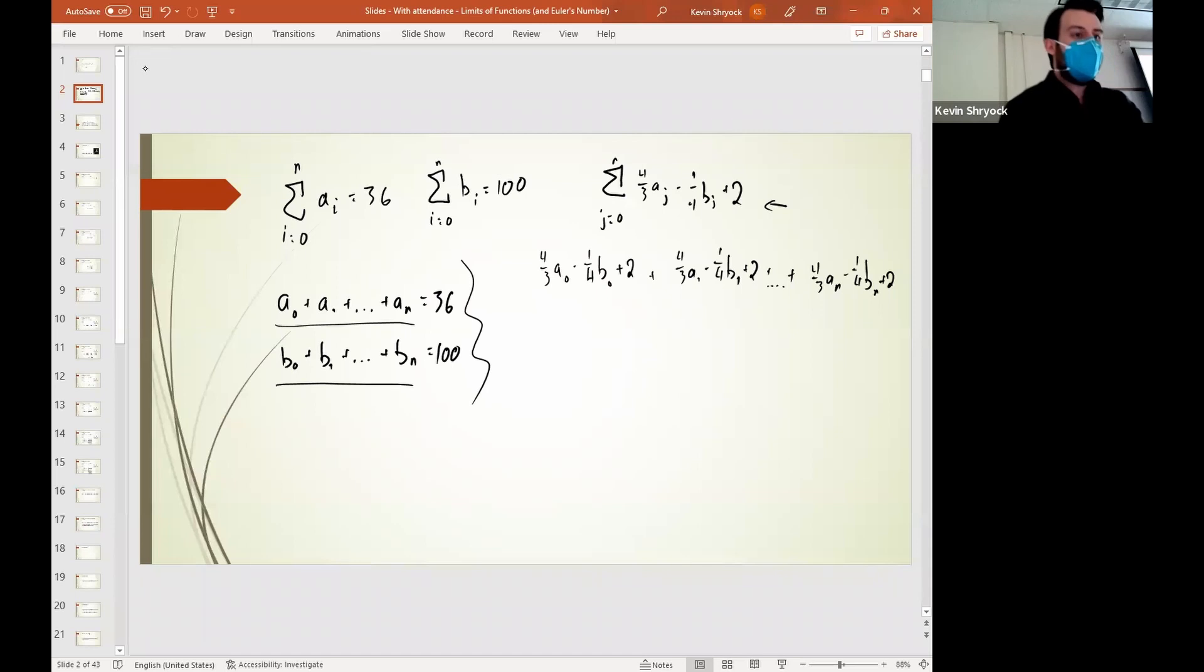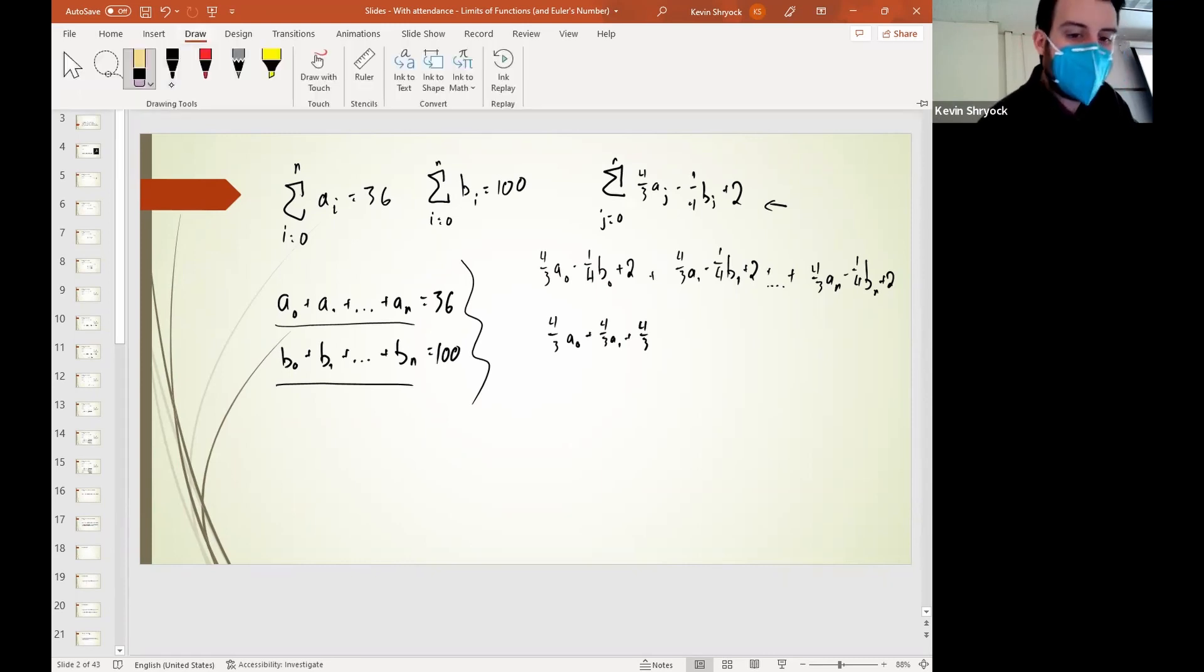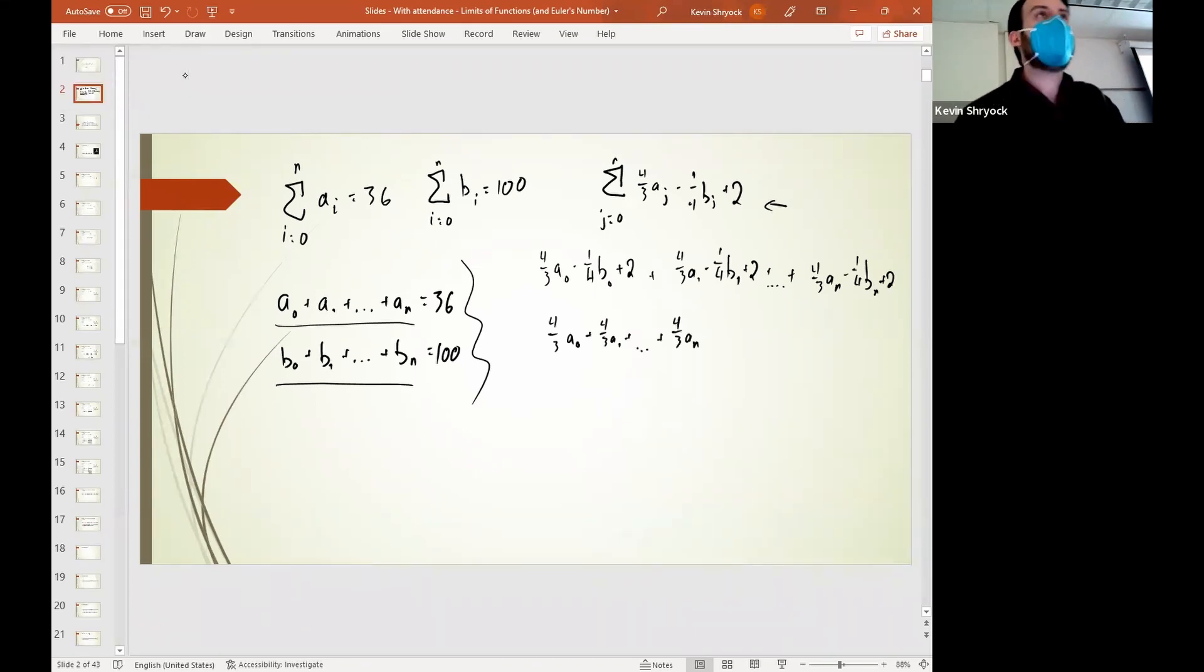If I want to bring all the A's together, that'd be 4 thirds A0. And then I need to grab the next A, which would be 4 thirds A1. And then the next one, 4 thirds A2, et cetera, all the way down. So I'd have 4 thirds A1, all the way on down. Alright. Got that. Should we do that with the B's? Let's try it with the B's. I'm going to grab all the different B's. I've got one right here. I'll put it in. I've got negative 1 fourth B0. I've got a negative 1 fourth B1. And I'm going to continue that going on and on and on until I get to negative 1 fourth B sub n. Alright. Now I've got A's. I've got B's. What about the 2's? There's a lot of 2's. How many 2's?